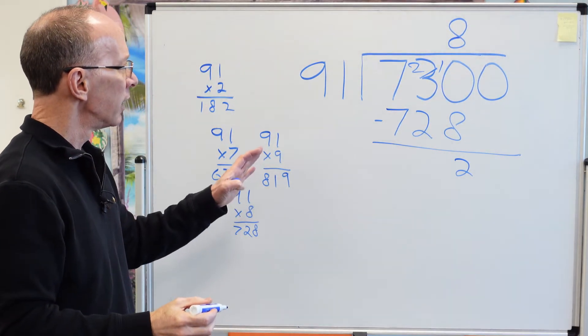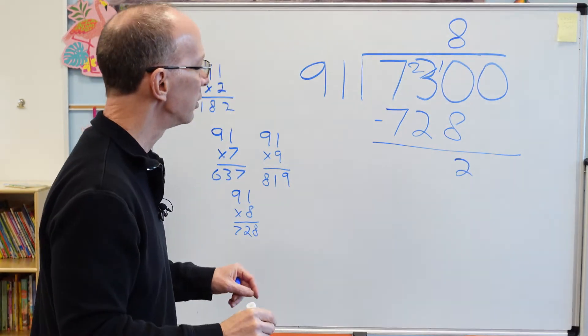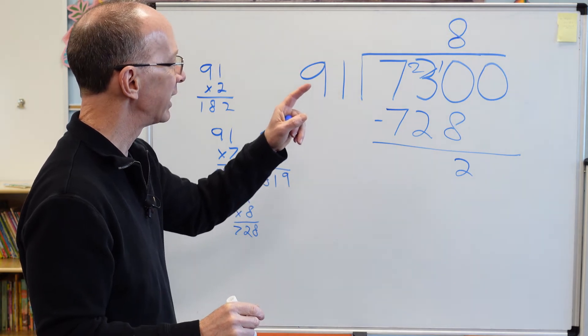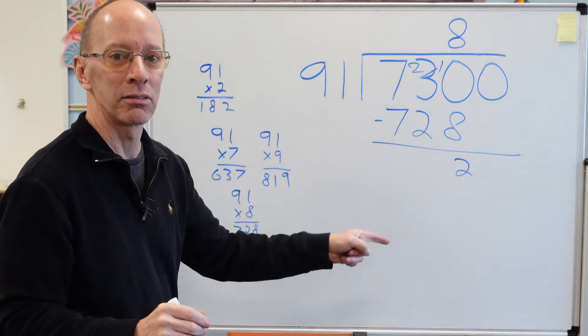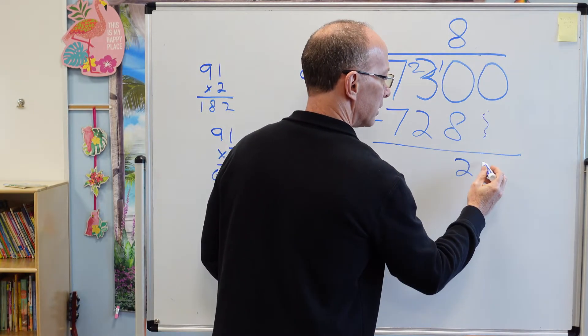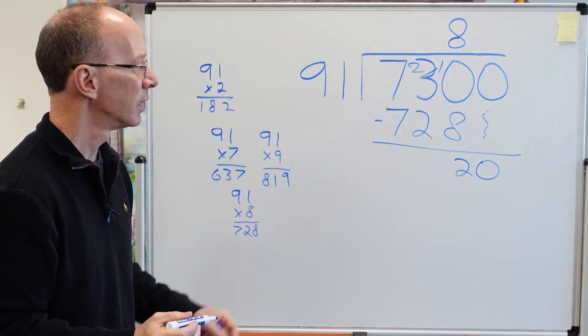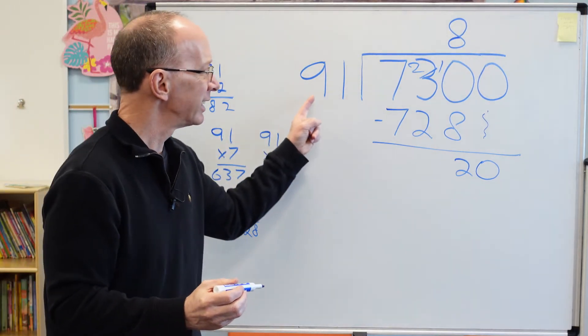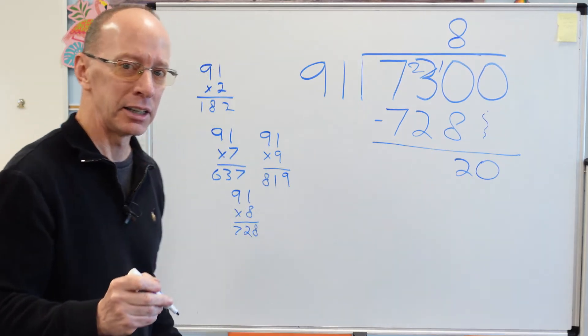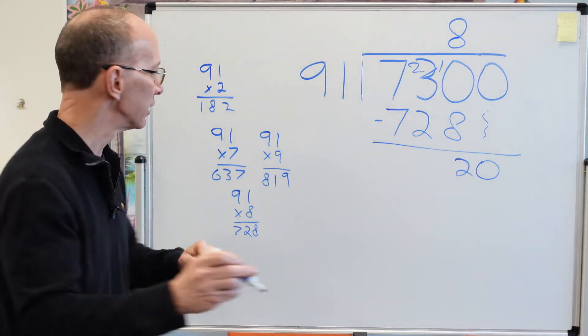Now this is the part that I think my friend got a little confused on. I need to bring that next number down. So I put 91 into 20. There is a number that you can multiply that you can do that. And don't forget about this.